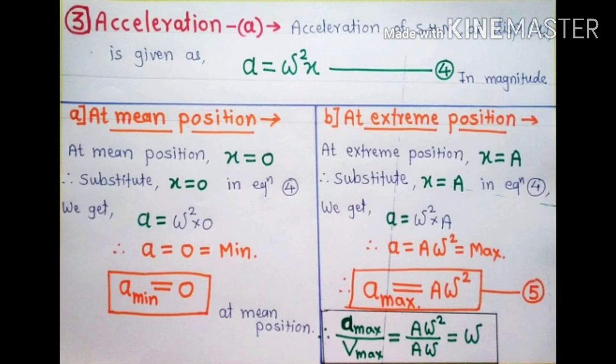The values of v_max and a_max from equations three and five are important for solving problems. If we take the ratio of a_max divided by v_max, we get: a_max / v_max = Aω² / Aω. The A terms cancel, and we get this ratio equal to ω. This important result can be applied to solve problems.